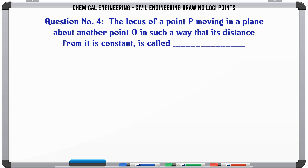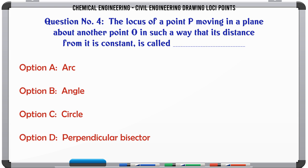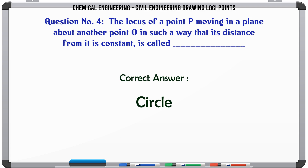The locus of a point P moving in a plane about another point O in such a way that its distance from it is constant is called: a) arc, b) angle, c) circle, d) perpendicular bisector. The correct answer is circle.